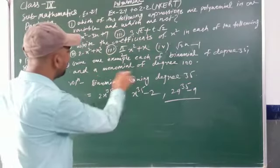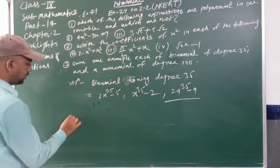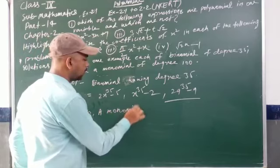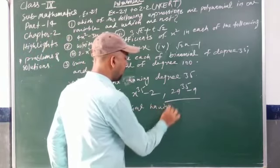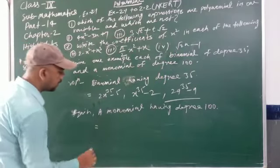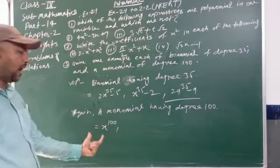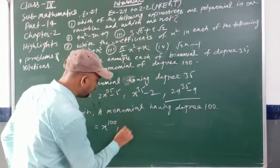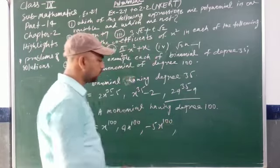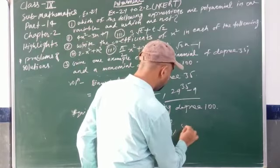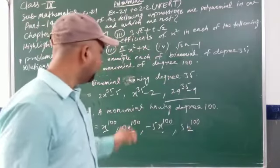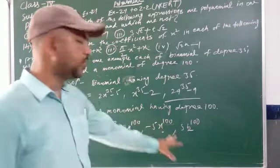For the monomial of degree 100, we can take x to the power of 100 — it is a monomial having only one term. Another example is 4h to the power of 100, also a monomial. We can also write 5v to the power of 100, where v is the variable — it has only one term and degree 100, so it is a monomial.